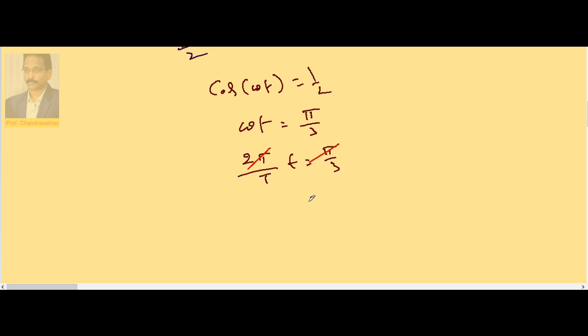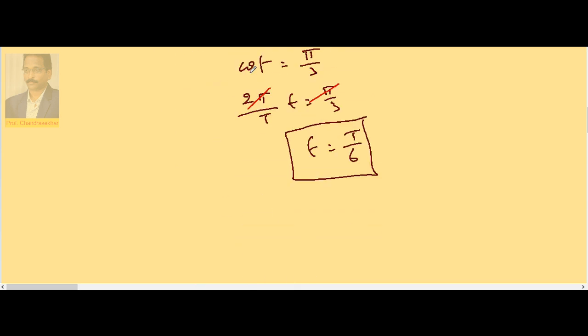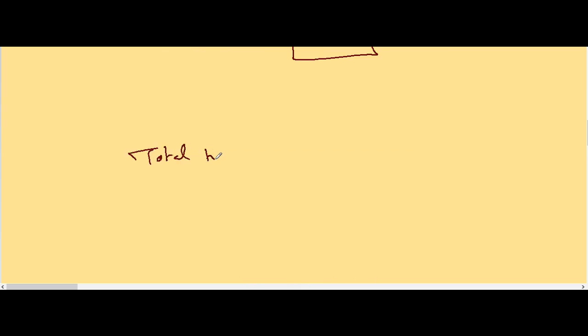Therefore t = T/6. The time taken to move from extreme to half is T/6. Again, half to extreme is also T/6. Therefore total time = T/6 + T/6, which is T/3.